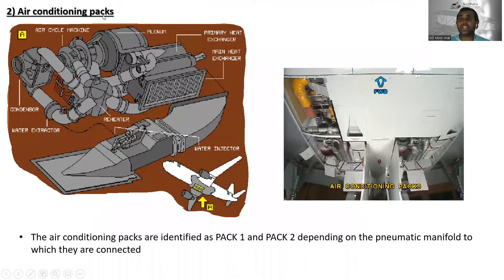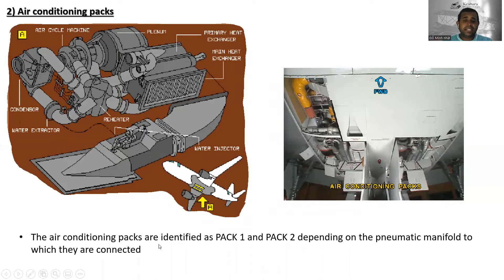Next is the air conditioning pack. You can see the condenser, water extractor, reheater, primary heat exchanger, main heat exchanger, plenum chamber, and water injectors. The air conditioning packs are identified as pack one and pack two depending on the pneumatic manifold to which they are connected.